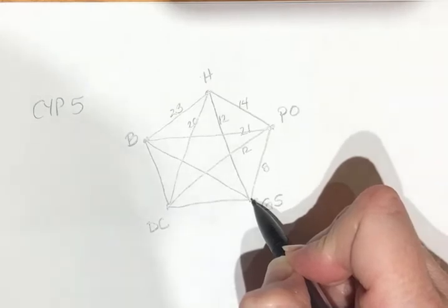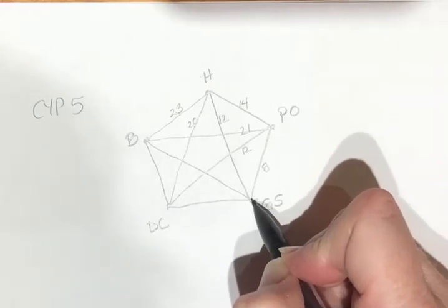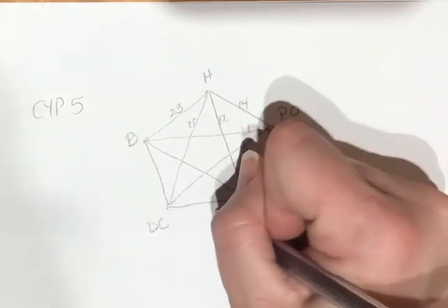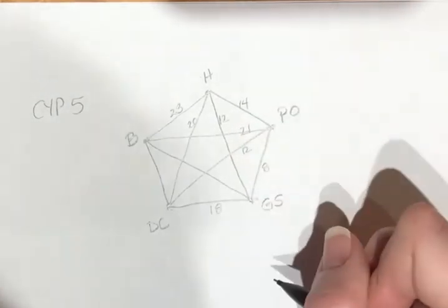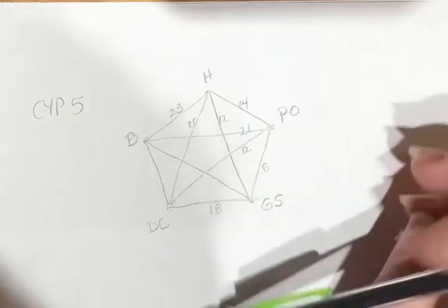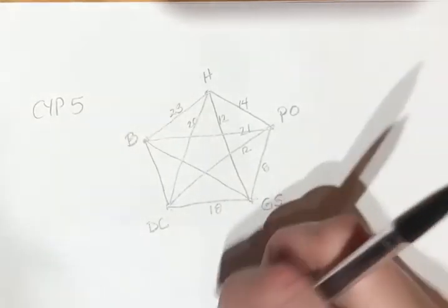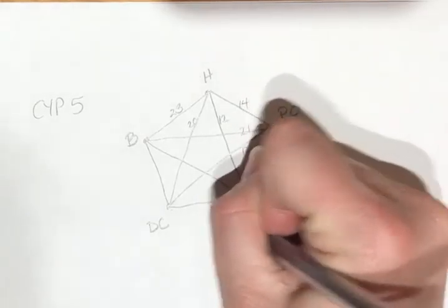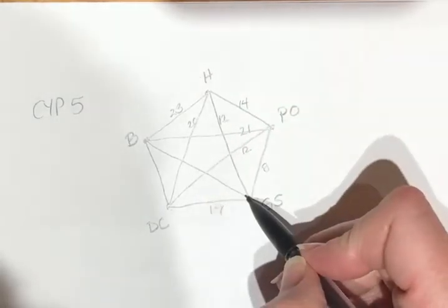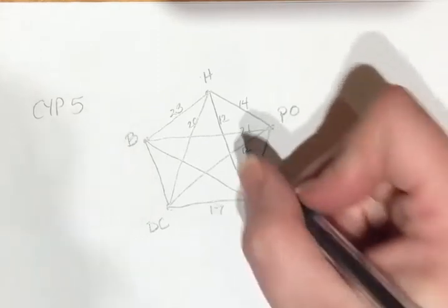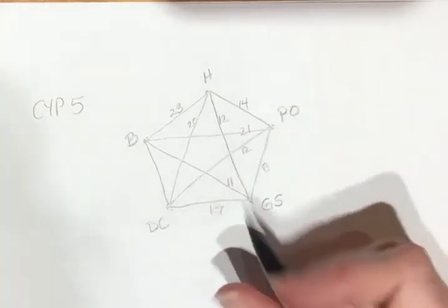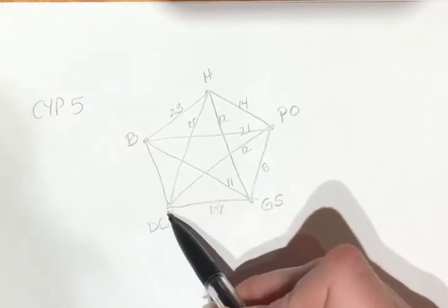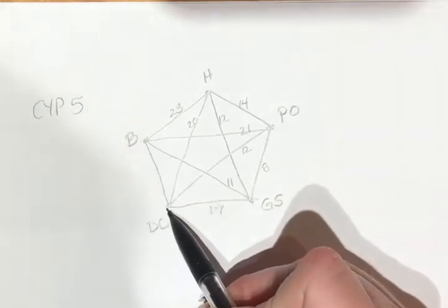Grocery store to the bank is 11, grocery store to the dry cleaners is 21. And then dry cleaners to the bank is the last one that we have, and that one is 18.